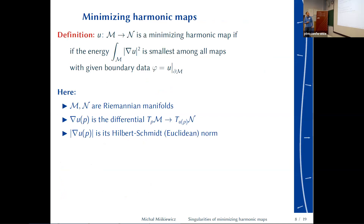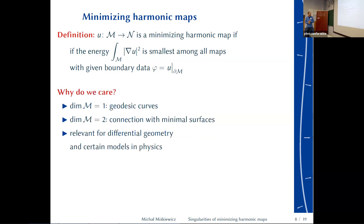Harmonic maps are a similar thing: I minimize the Dirichlet energy but now as a map between two Riemannian manifolds, with boundary data, wanting the smallest energy among all admissible maps. The differential ∇ is a linear map between tangent spaces, and I use the Hilbert-Schmidt (L2) norm — the simplest norm coming from the inner product. Why do we care? Minimizing geodesic curves are an example when the domain is one-dimensional.